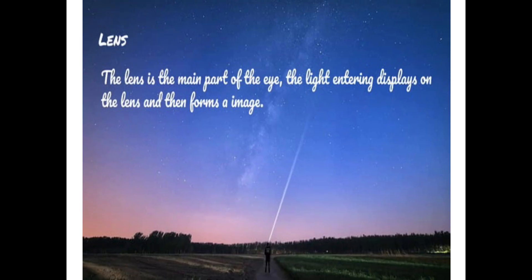Lens. The lens is the main part of the eye. The light entering displays on the lens and then forms an image.